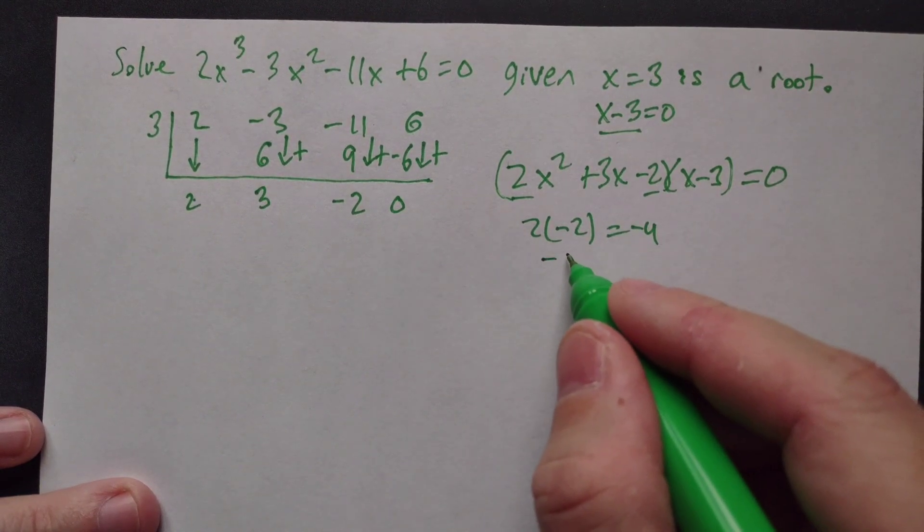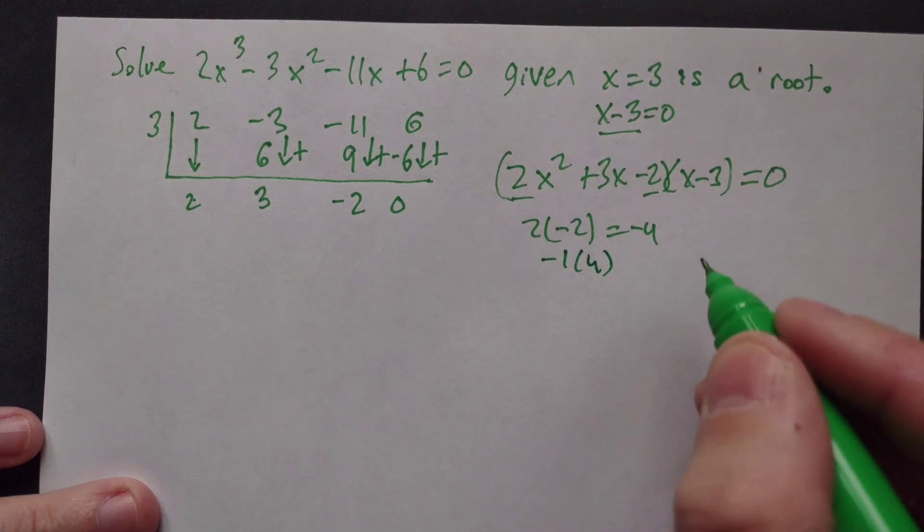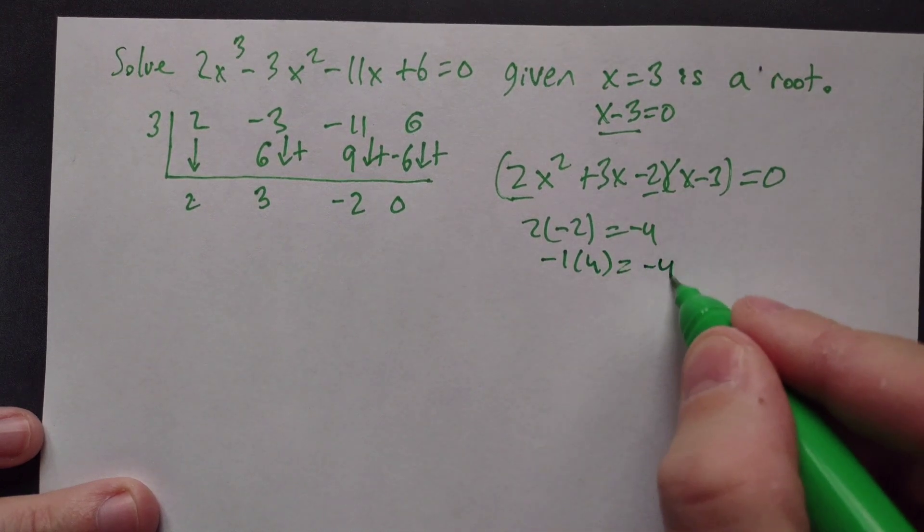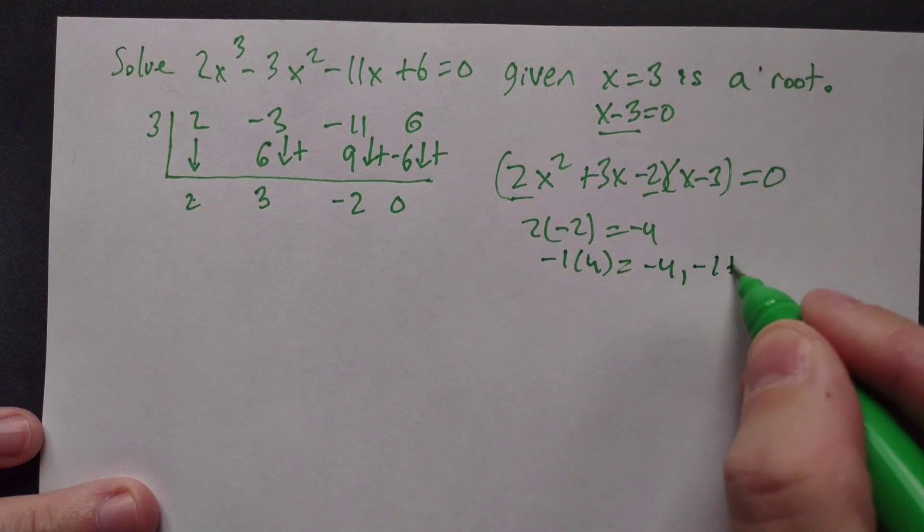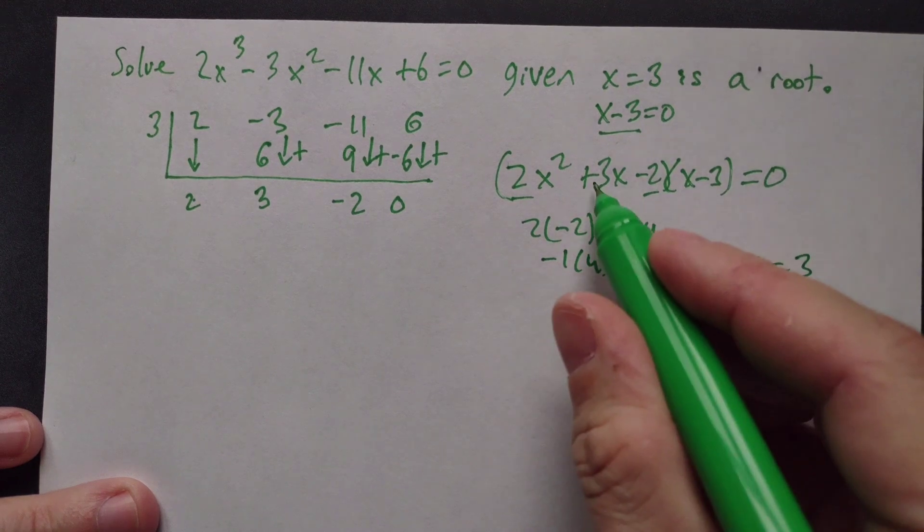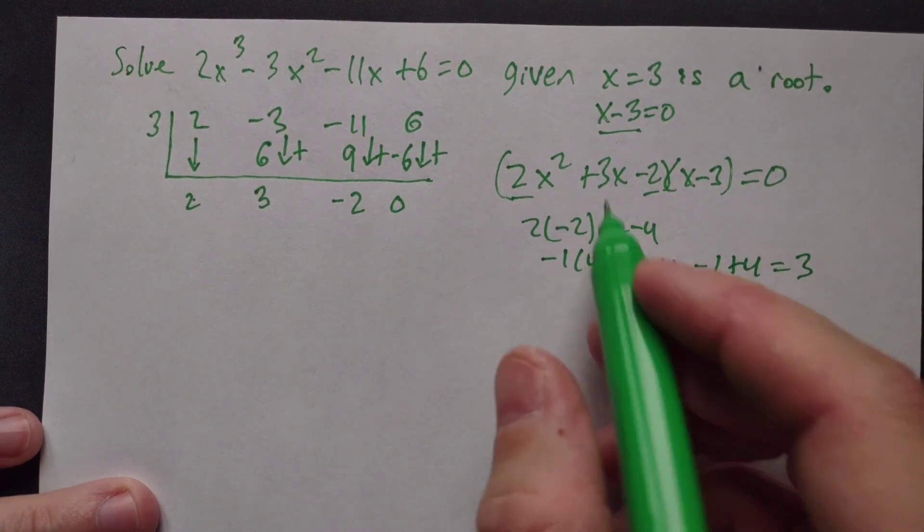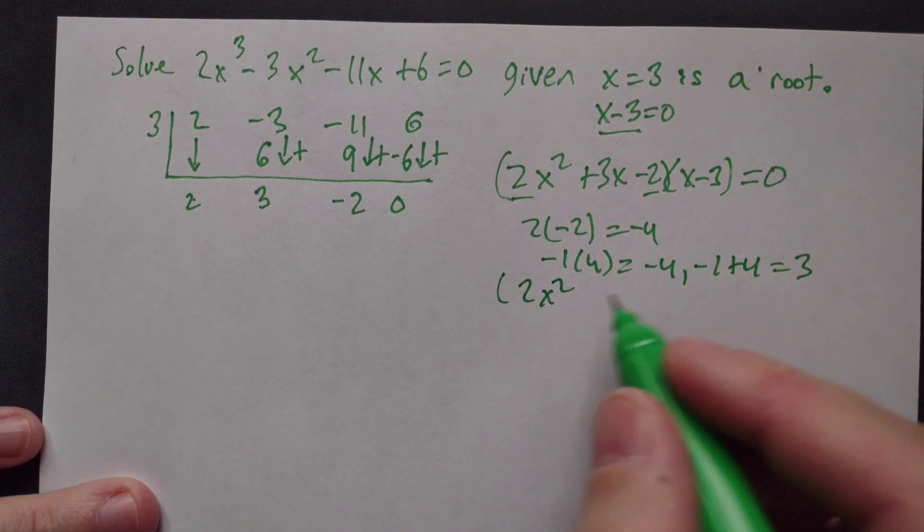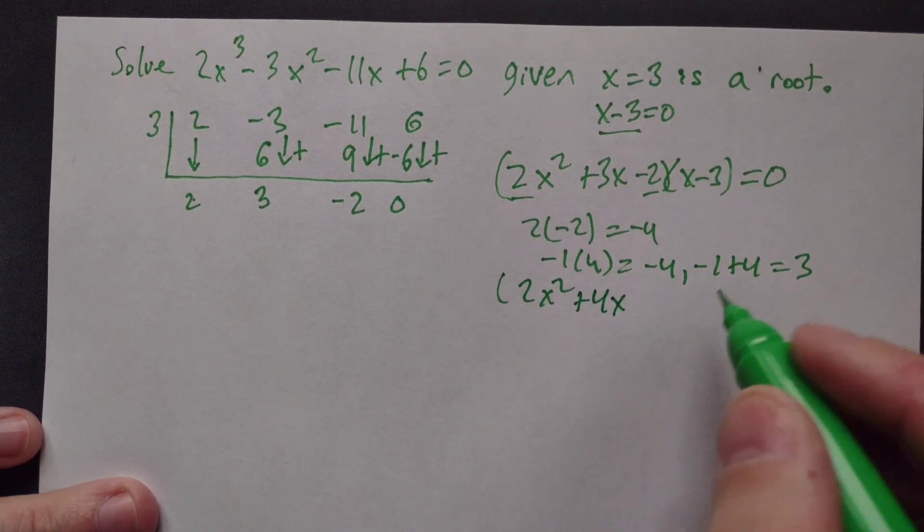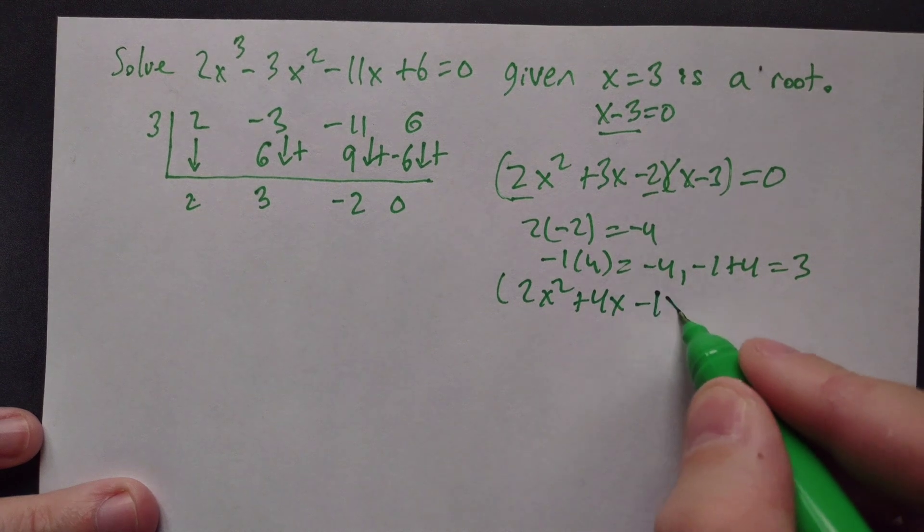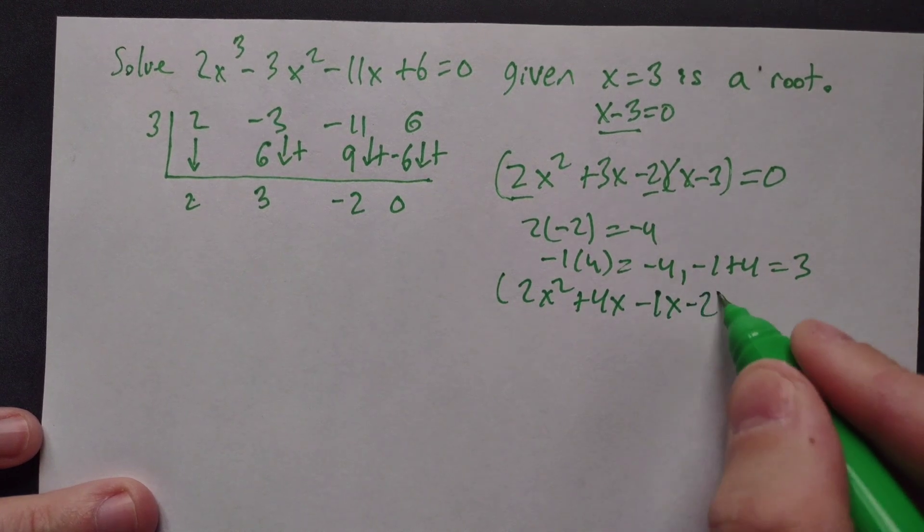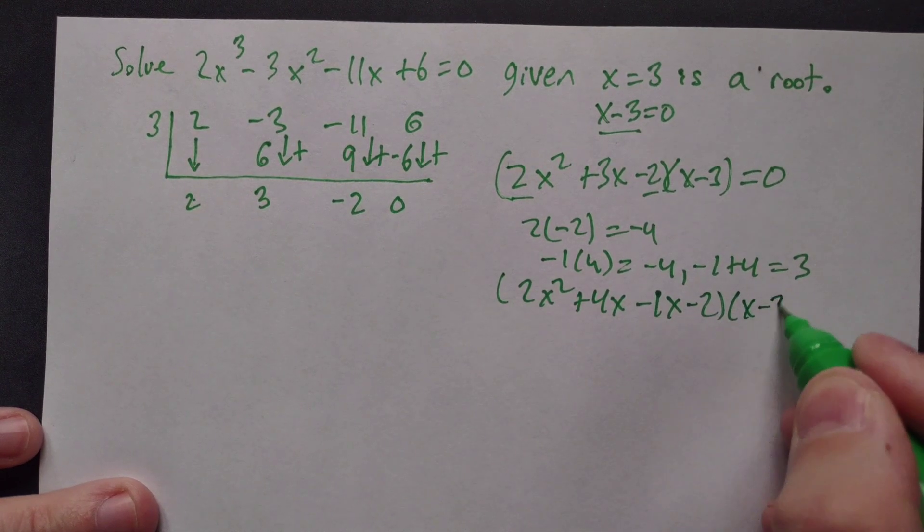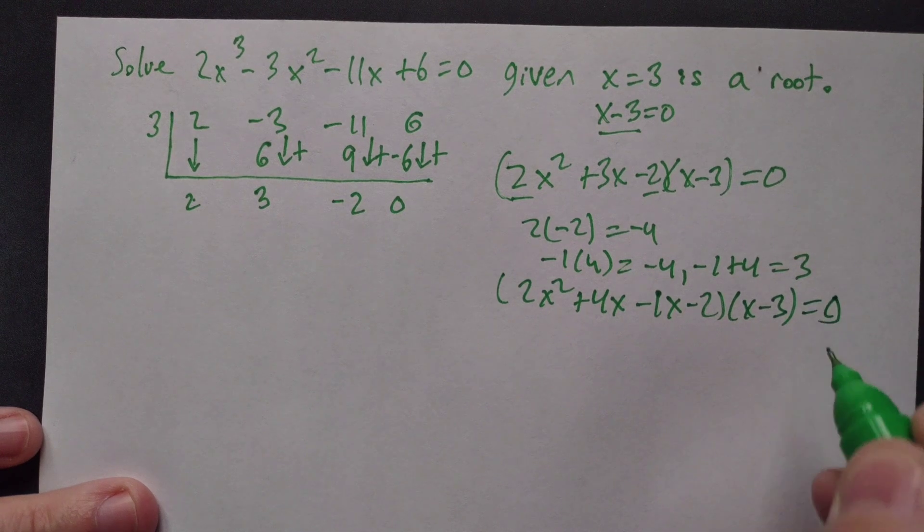The numbers are -1 and 4, because (-1)(4) = -4 and -1 + 4 = 3. Write this as (2x² + 4x - 1x - 2)(x - 3) = 0.